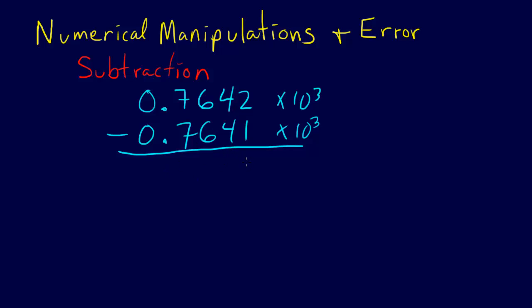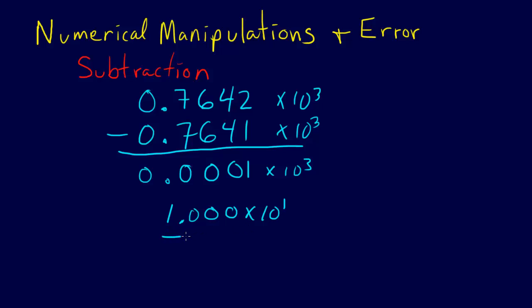And as we do, we can see we get 0.0001 times 10 to the third. We started out here with four digits of precision. Now what happens is we're going to normalize this, and so we're going to have 1.00 times 10 to the 1. That is what we're going to have as our result — these digits here really aren't significant. So what we have now is a problem where we used to have four significant digits, and now we're down to only one.